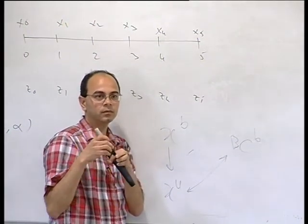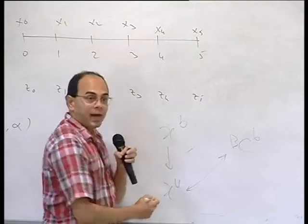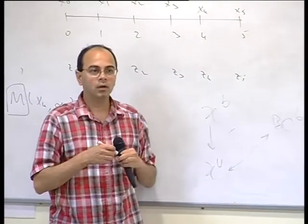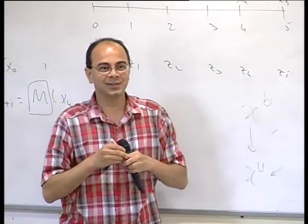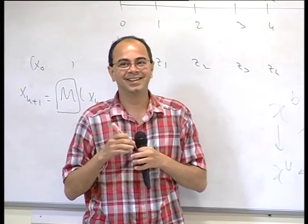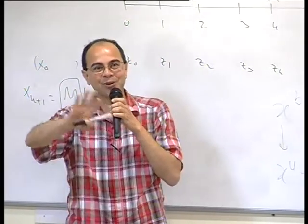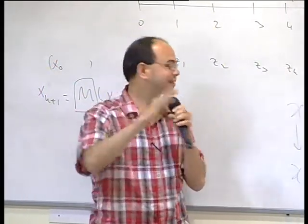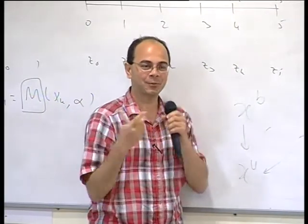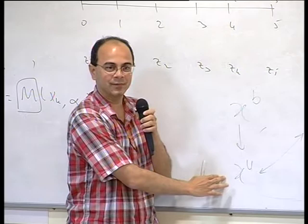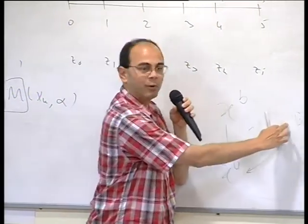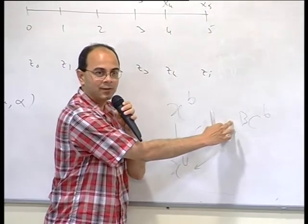Sir, x_a is not the minimum — x_a is the analysis. That is the minimum of the cost function. So okay, it is the analysis and it is the minimum of the cost function. And what you are saying is: the analysis is not in balance with the boundary condition with which you started.